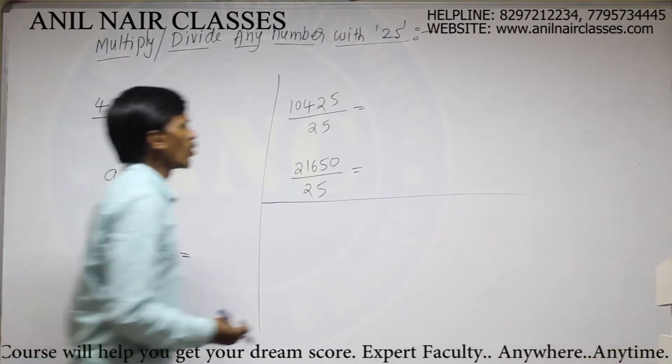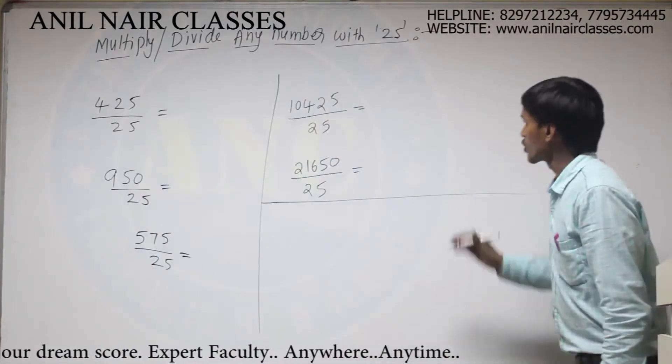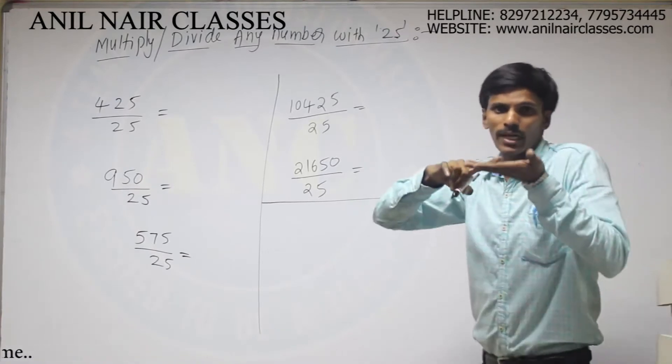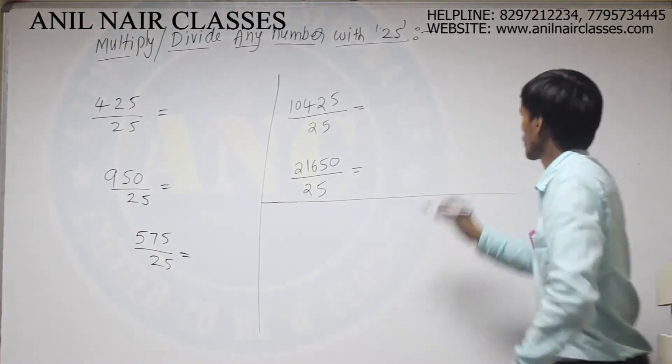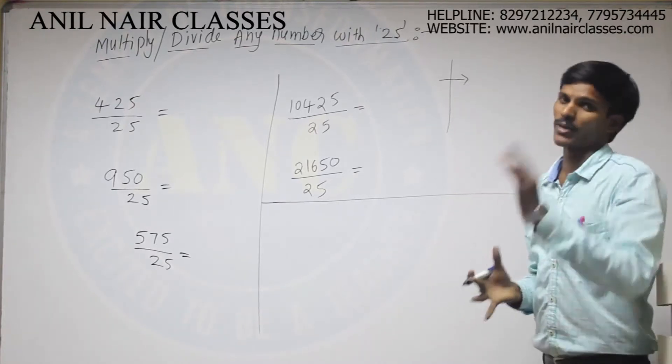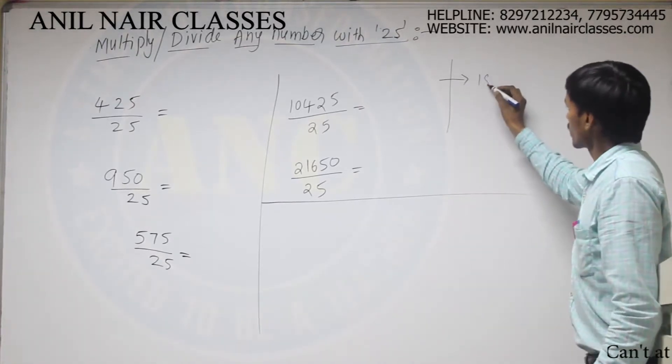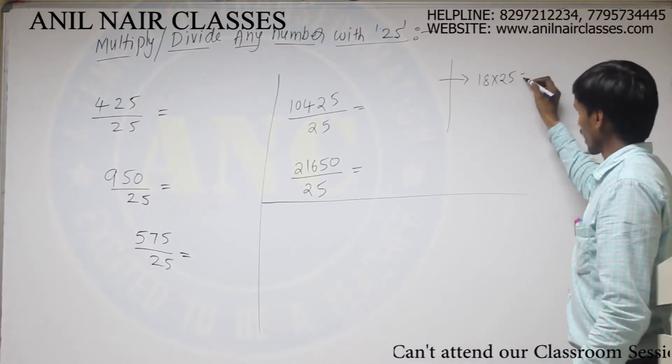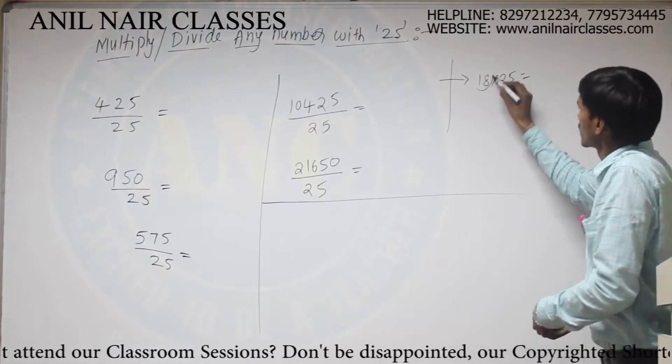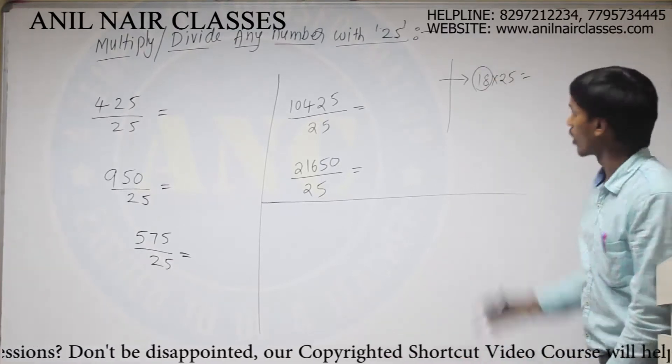Now, previously, what we did there? To multiply with 25, you have divided the given multiplication value with 4. So, for suppose I am taking one example to explain you the previous model one more time. For suppose, 18 into 25 was there. Then what I have to do? Multiplication with 25. Divide this number with 4.